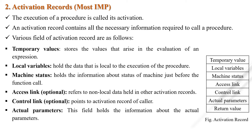The first field is temporary values. Temporary variables needed during the evaluation of expressions are stored in the temporary field of the activation record. The second field is local variable — local data that is local to the executing procedure is stored in this field. The third field is machine status, which holds information regarding the status of the machine just before the procedure is called, including registers and program counters.